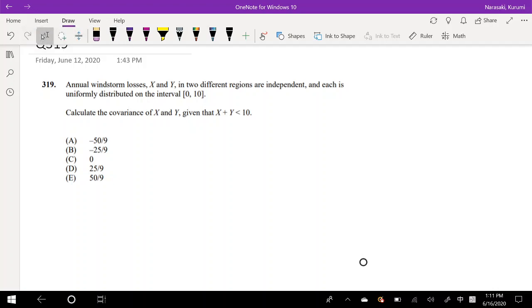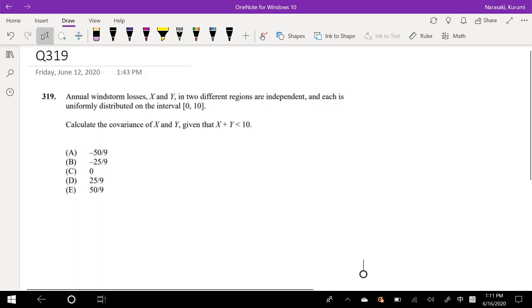Hey guys, it's Rumi the math person, and today I'll be going over question number 319 on SIA ZMP. So pause the video real quick and try this problem yourself. Assuming that you tried this problem yourself, let's dive right in. Annual windstorm losses x and y in two different regions are independent, and each is uniformly distributed on an interval of 0 to 10. Calculate the covariance of x and y given that x plus y is less than 10.